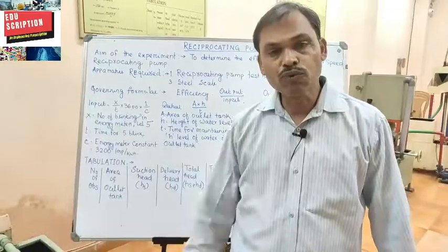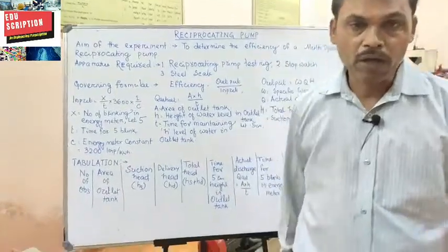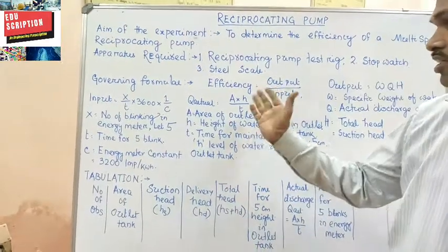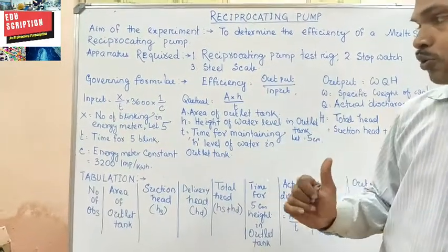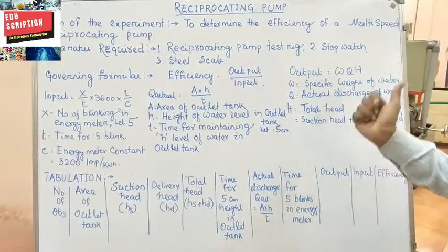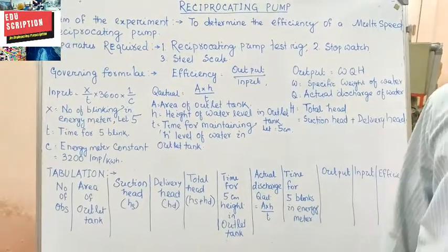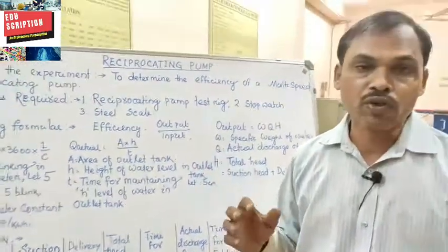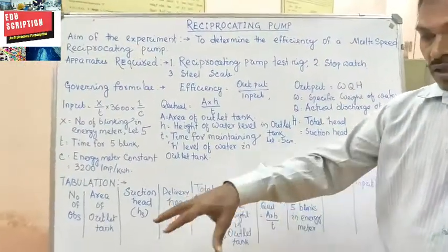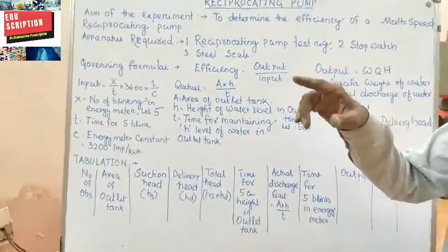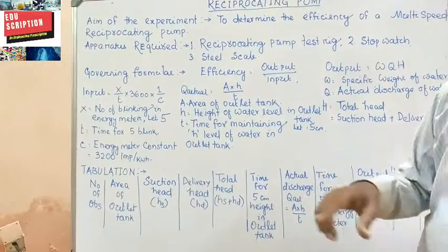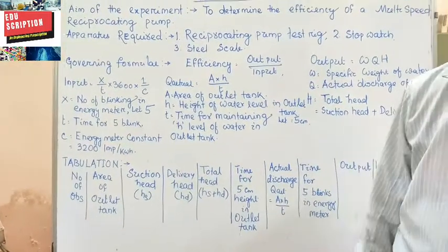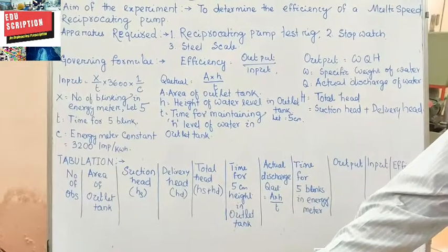Now for the governing formulas to find out efficiency. Two basic things are necessary: output and input. For output, the formula is W×Q×H, where W is the specific weight of water, Q is the discharge — the actual rate of flow — calculated as A×h/t, where A is the area of the outlet tank, h is the height of water level in the outlet tank, and t is the time to rise that height.